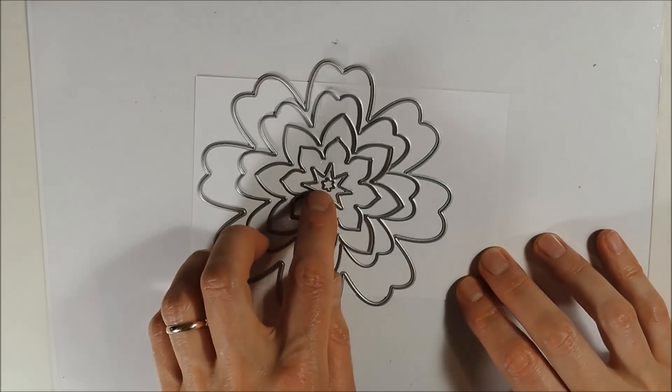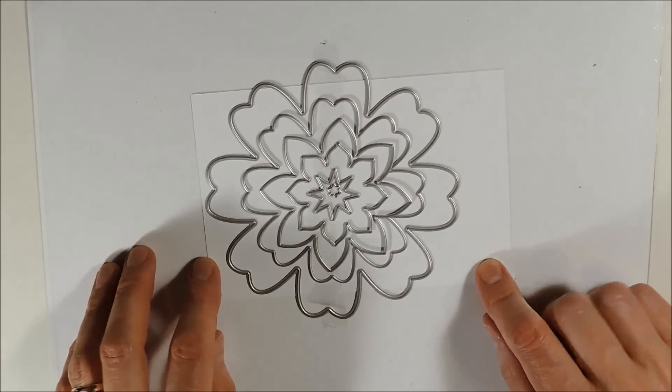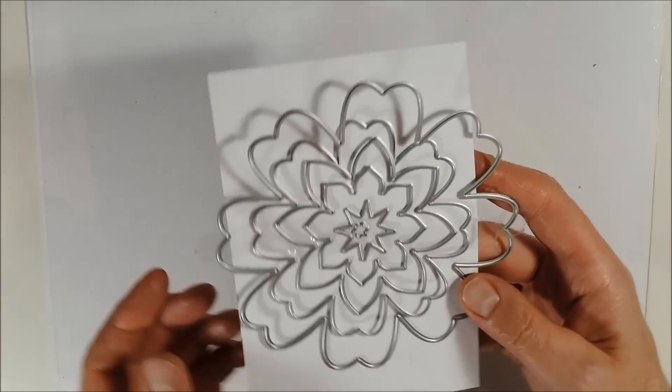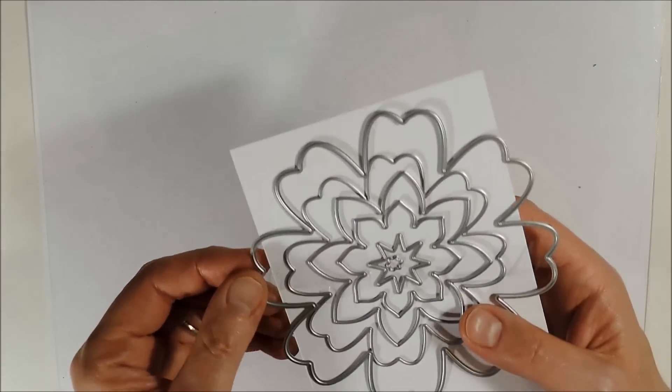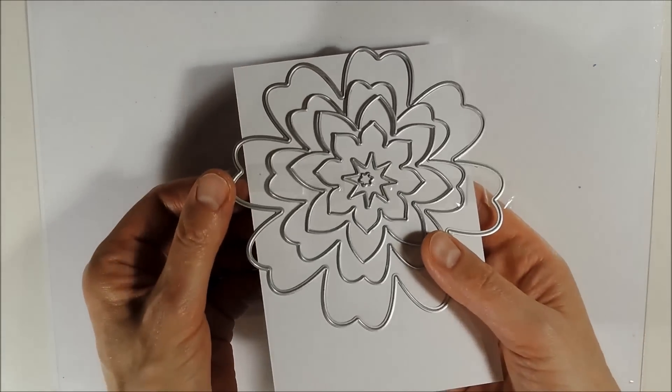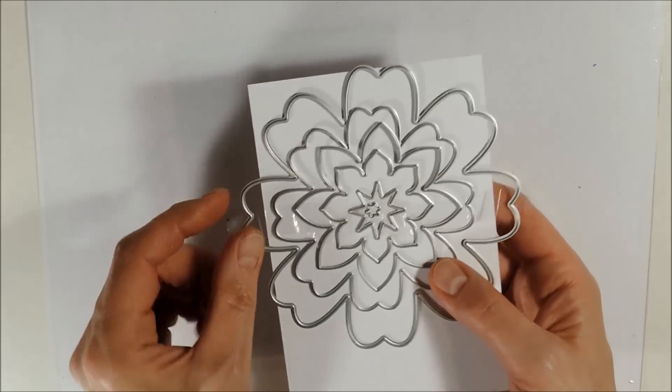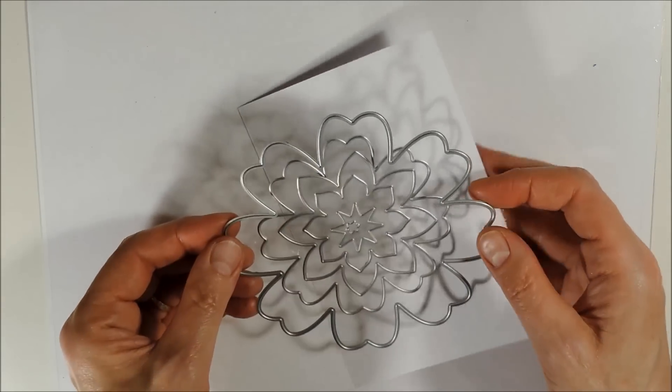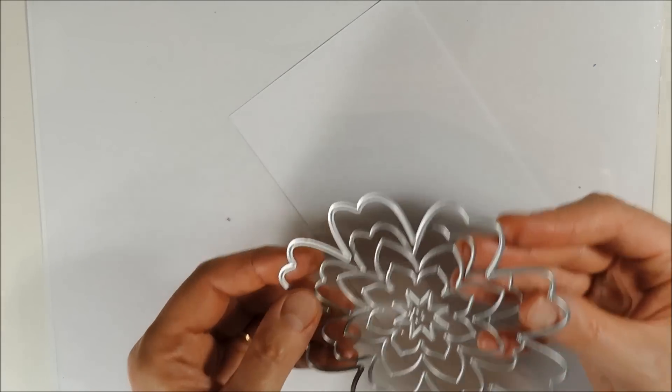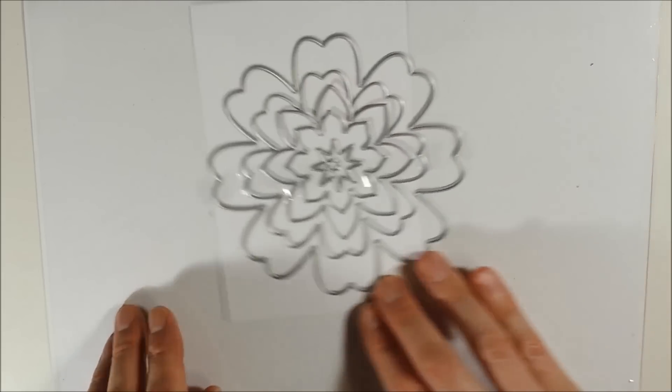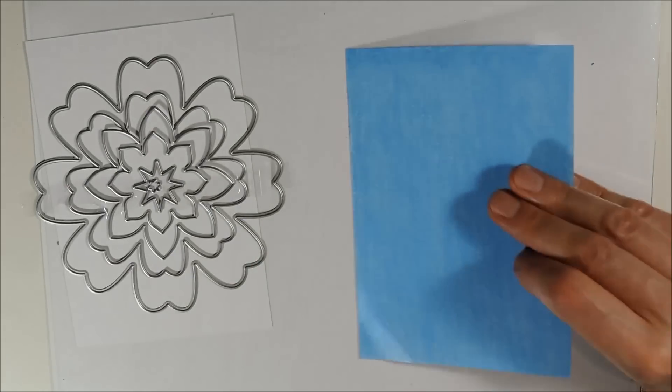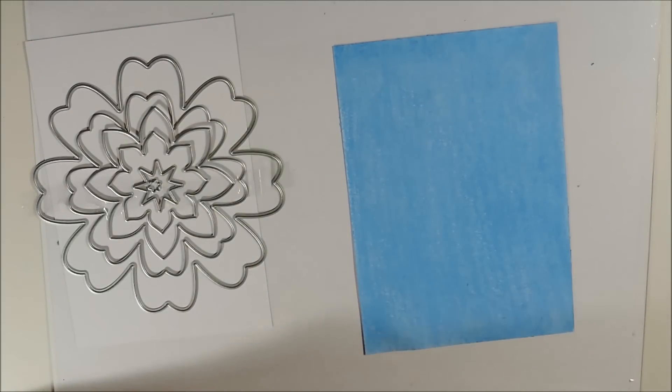This last die set ranges between quite large. You see the largest die is larger than the index card. Until very itsy bitsy tiny. You will see the smallest die measures about half a cm. So now let me show you the cut outs.